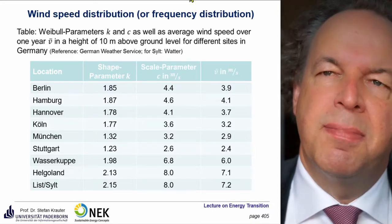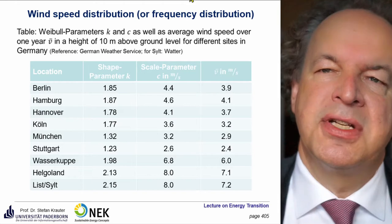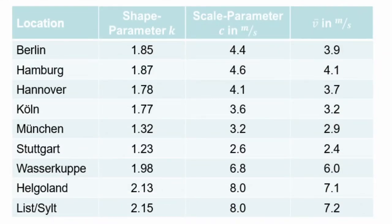Here you see some examples of wind power distributions or frequency distributions. For Germany, wind speeds are measured at a height of 10 meters above ground level. For Berlin — not at the coast — conditions are less favorable; the shape factor is below 2, at 1.85, with scale parameter 4.4 meters per second and average wind speed of 3.9 meters per second. For very good conditions, the island of List-Sylt in the North Sea has a shape parameter of 2.15, scale parameter of 8 meters per second, and average wind speed of 7.2 meters per second — still far from the shape factor of 3.